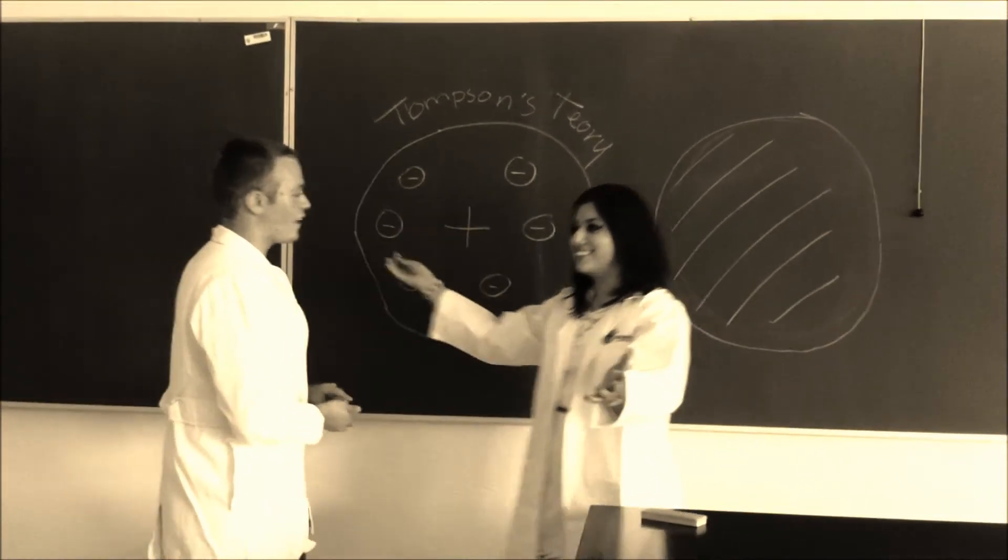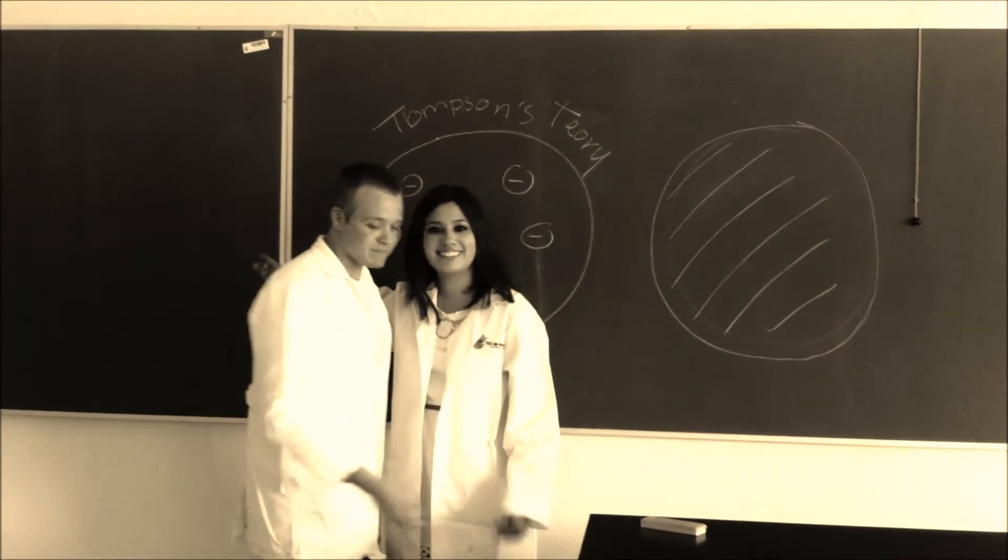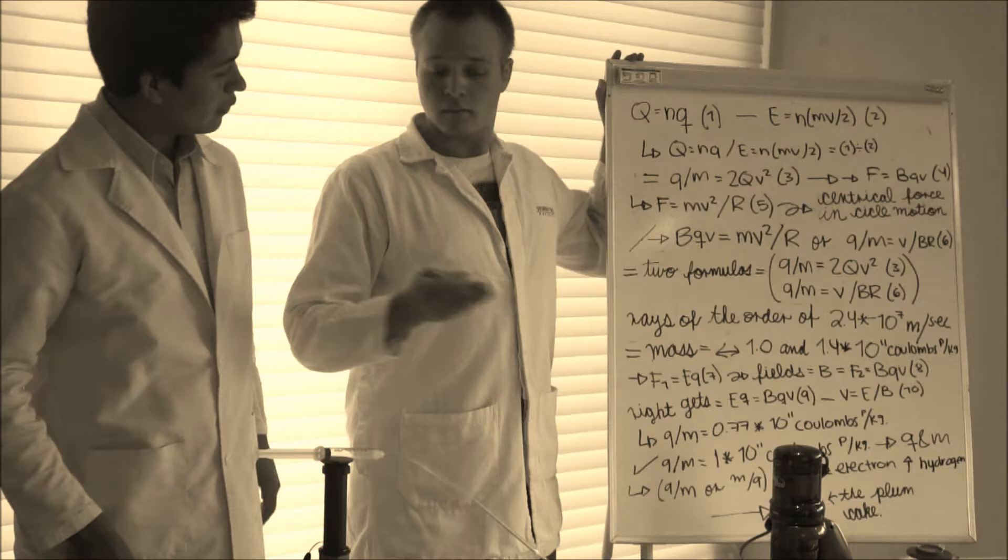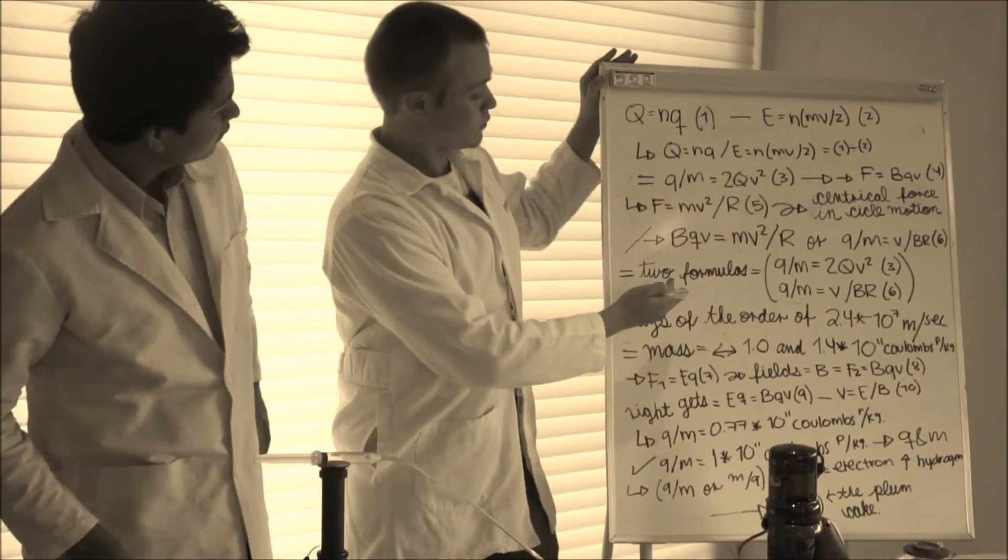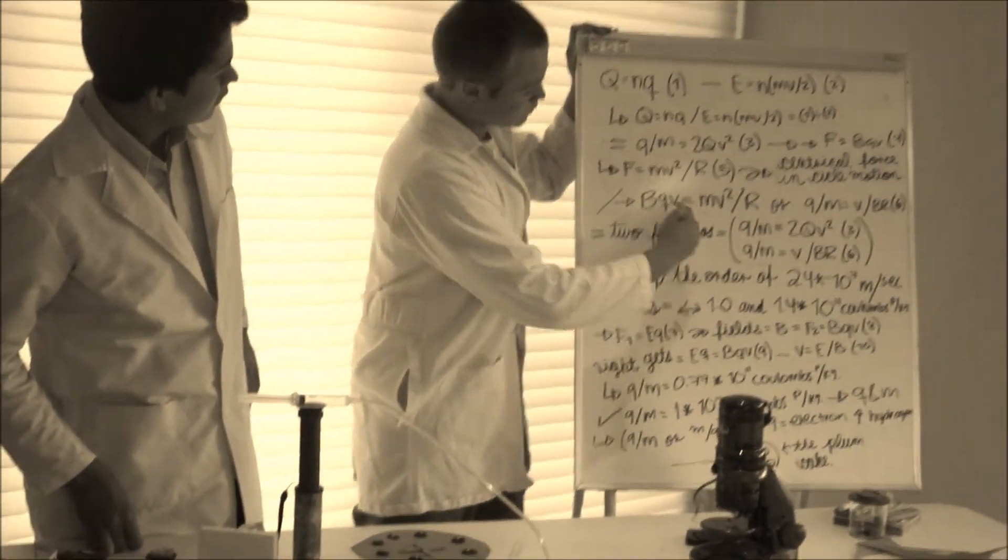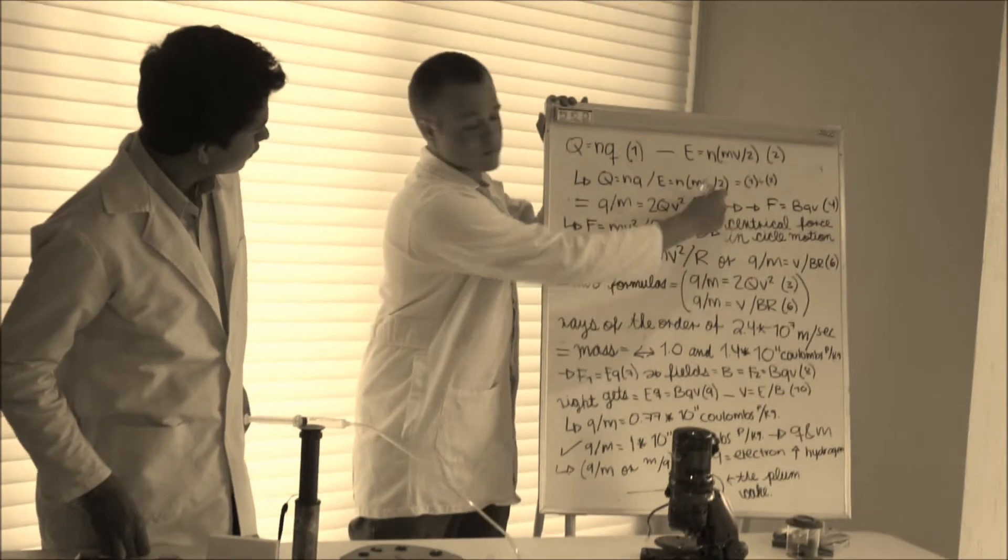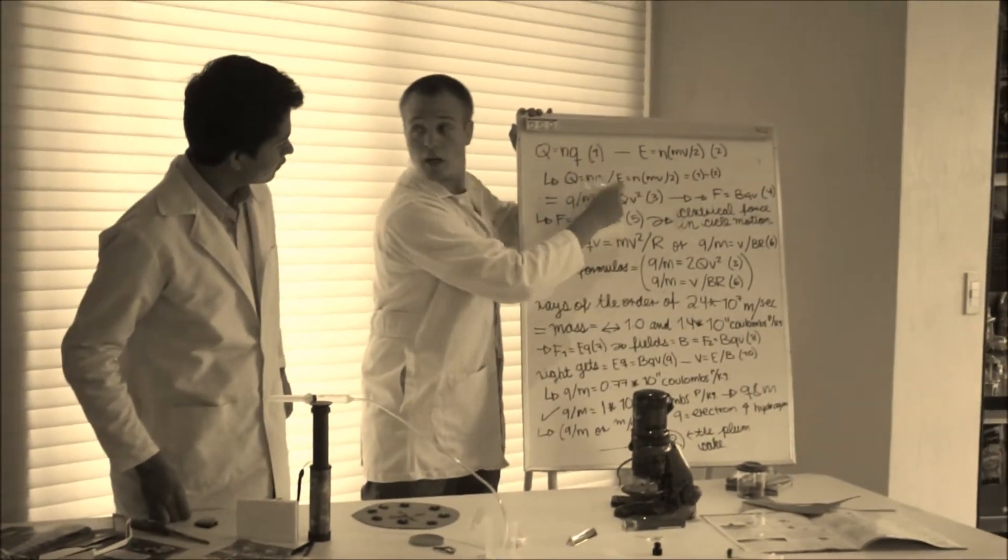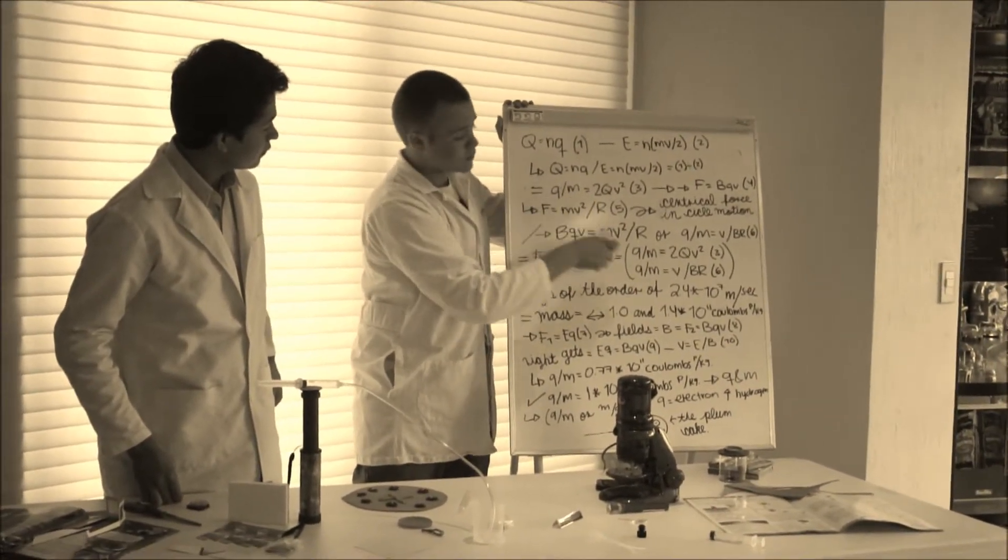He was a convention professor of experimental physics at Cambridge, where he succeeded Lord Rayleigh from 1884 to 1918.